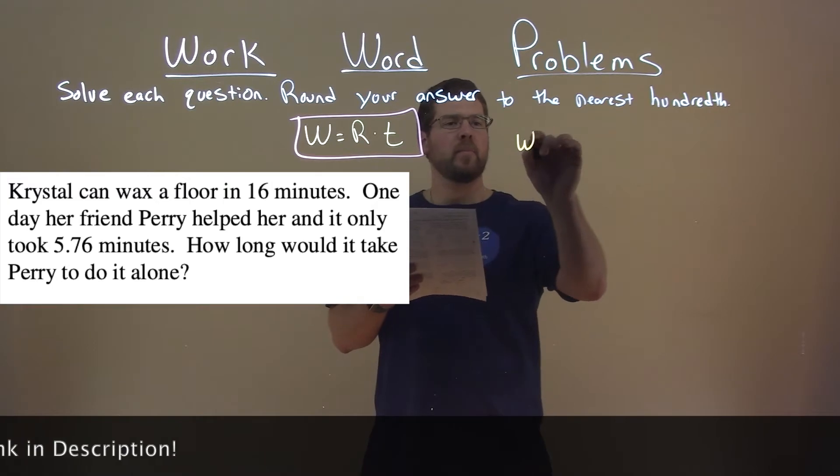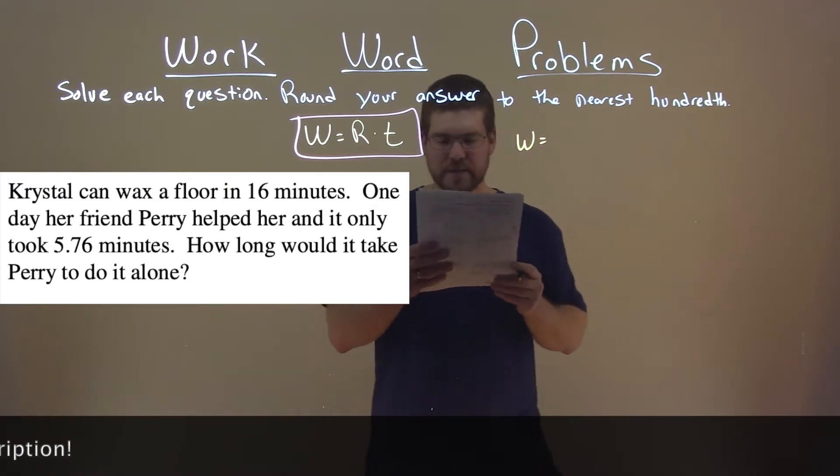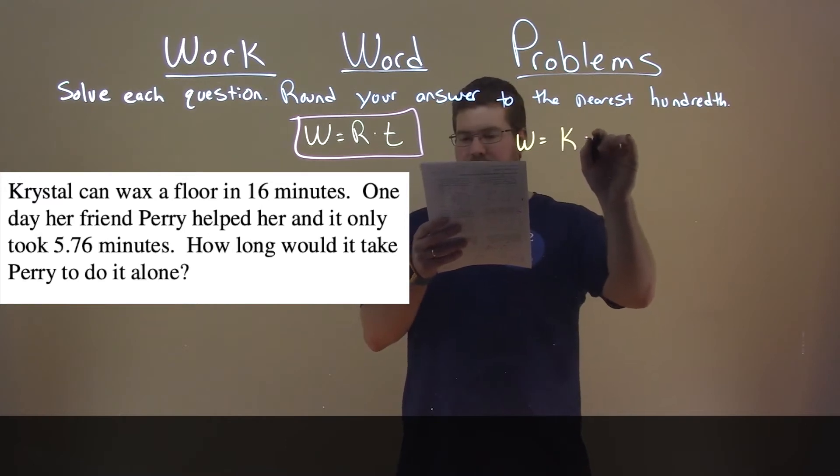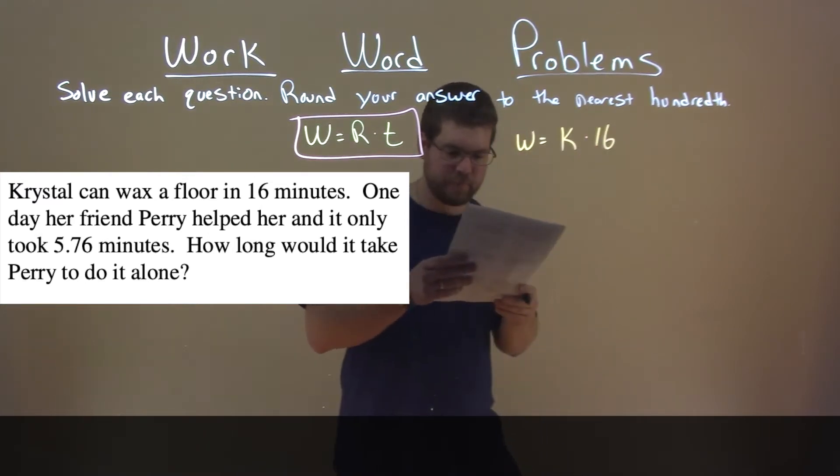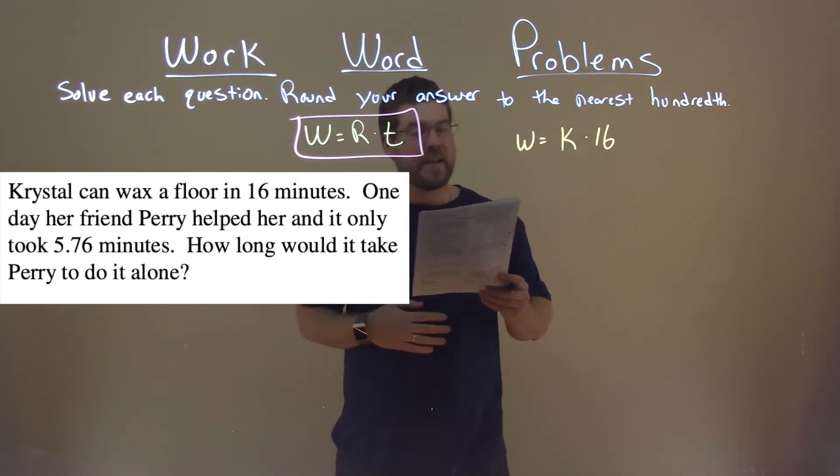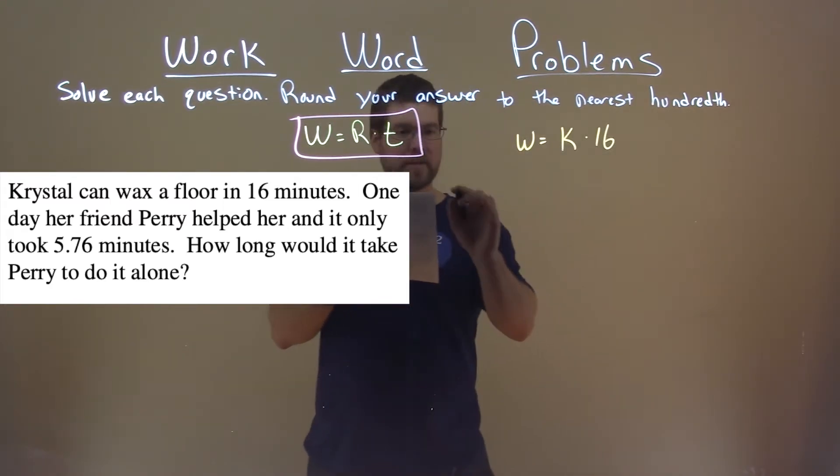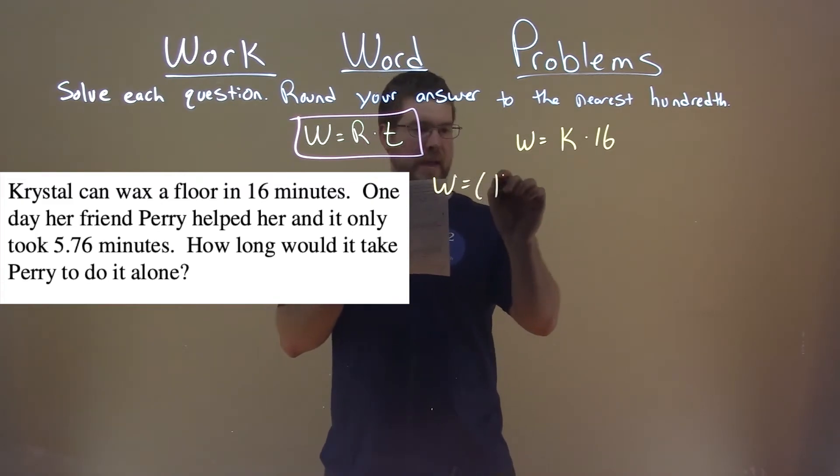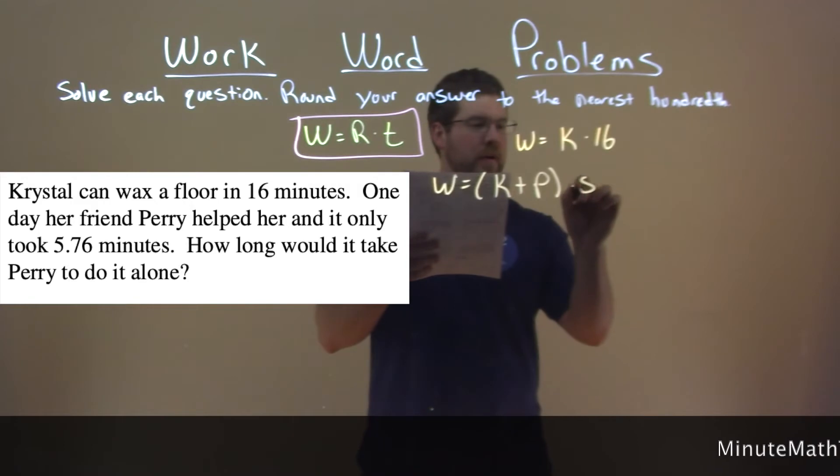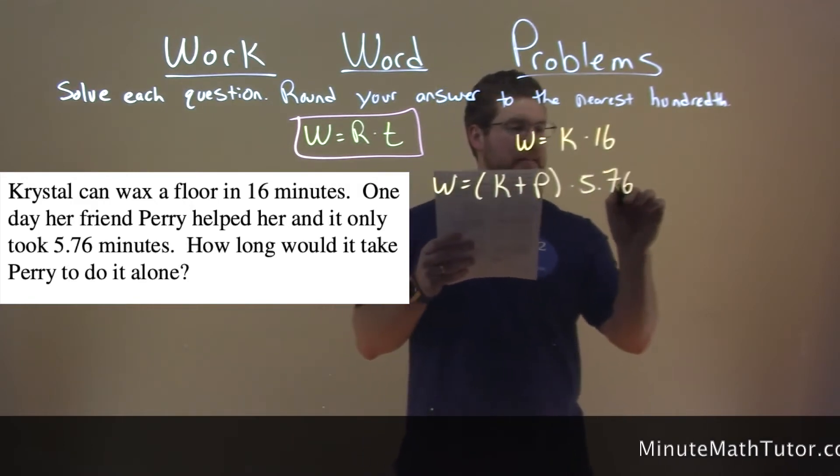Our work here, whatever that job is, that work takes Crystal's rate times 16 minutes. Perry helps her one day and they did it in 5.76 minutes. So we can set up the formula w equals, we add their two work rates together, k plus p, times 5.76 here.